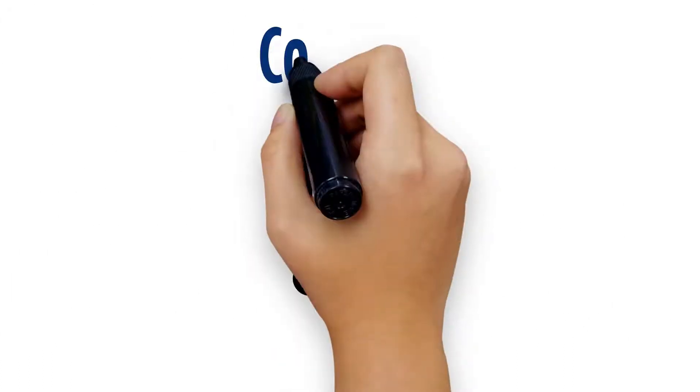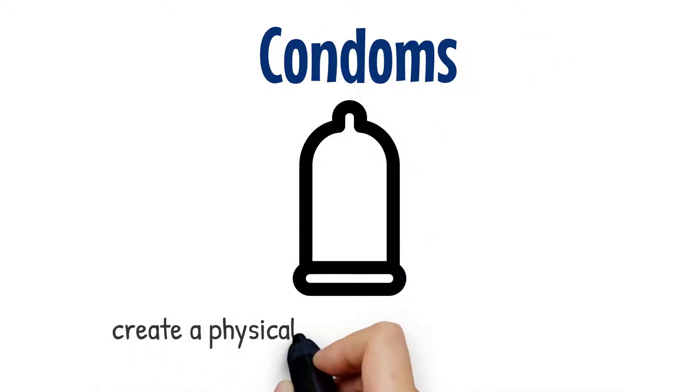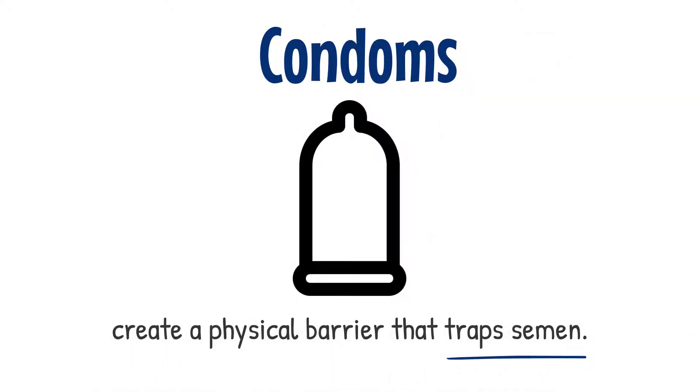The male condom is used by rolling it onto an erect penis before sexual intercourse. It works by creating a physical barrier that traps semen, preventing it from entering the body of a sexual partner.